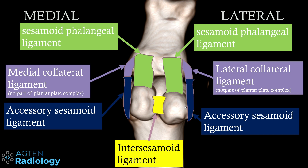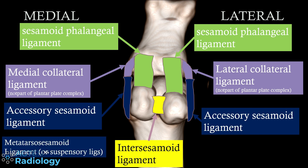In addition, you have accessory sesamoid ligaments — sometimes also called metatarsal sesamoid ligaments or suspensory ligaments — which go from the medial and lateral aspect of the head of the first metatarsal bone down to the lateral aspect of the sesamoid, thereby helping to hold this complex structure together and distribute forces during sports activity or normal walking.